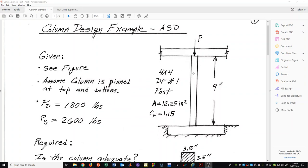In the figure we see that we have a column. It is nine feet tall and that is the clear distance. We are assuming in this case that it is a four by four Douglas fir number one post and it has a cross-sectional area of 12.25 square inches which we could get from the NDS supplement section properties table.